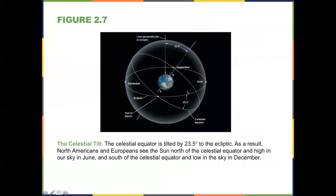As we go around the sun, sometimes we're tilted towards it and sometimes away, but we're always tilted towards Polaris. So sometimes the sun is a little higher in the sky and sometimes a little lower. We're tilted at 23 and a half degrees from the sun's pole — that's a good number to remember.